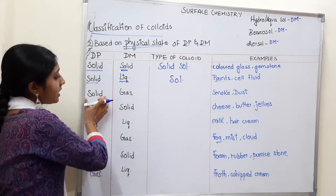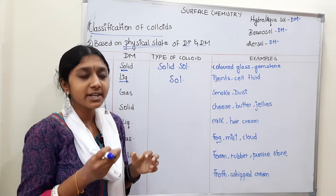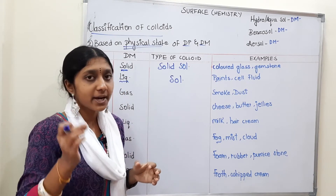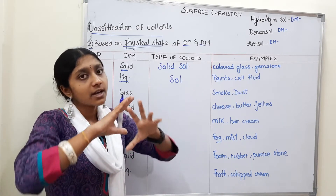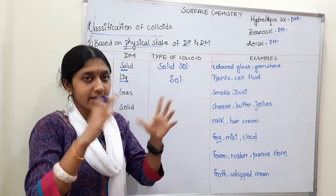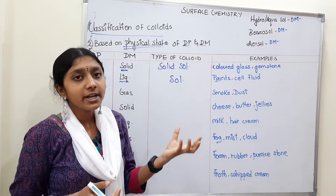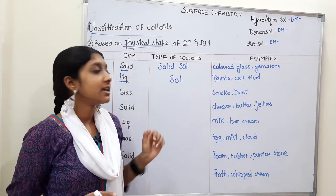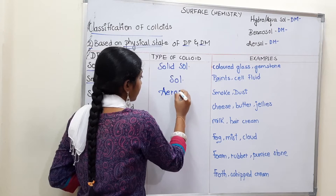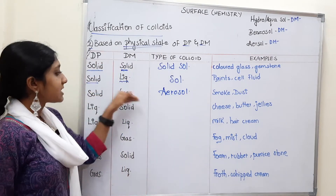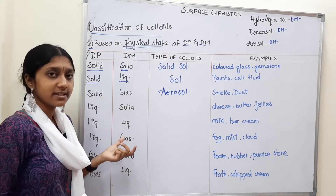Third type: solid is the dispersed phase and gas is the dispersion medium. Examples include smoke, dust particles, and burnt particles. The type of colloid is called Aerosol.